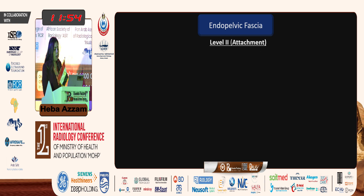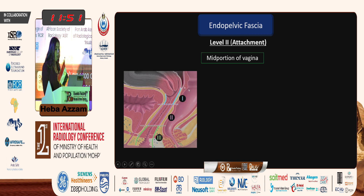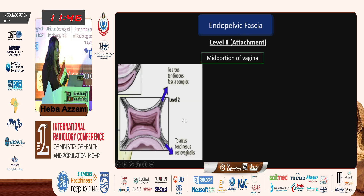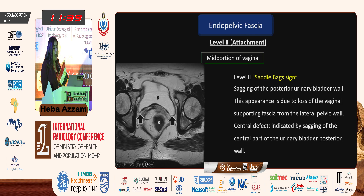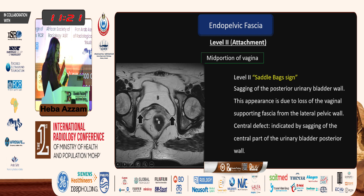Level two is called the level of attachment, which is the mid portion of the vagina, attached to the arcus tendineus fascia complex. The defect causes sagging of the posterior urinary bladder wall due to loss of the vaginal supporting fascia from the lateral pelvic wall — usually posterolateral. Sometimes there is a central defect indicated by sagging of the central part of the urinary bladder, a sign called the saddle back sign.